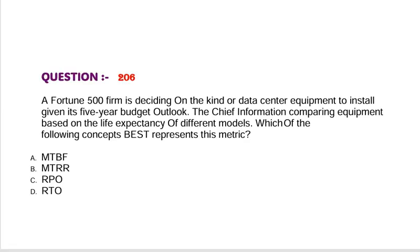Question: A Fortune 500 firm is deciding on the kind of data center equipment to install given its 5-year budget outlook. The chief information officer is comparing equipment based on the life expectancy of different models. Which of the following concepts best represents this metric? Option A, MTBF. Option B, MTTR. Option C, RPO. Option D, RTO. Correct answer is Option A.